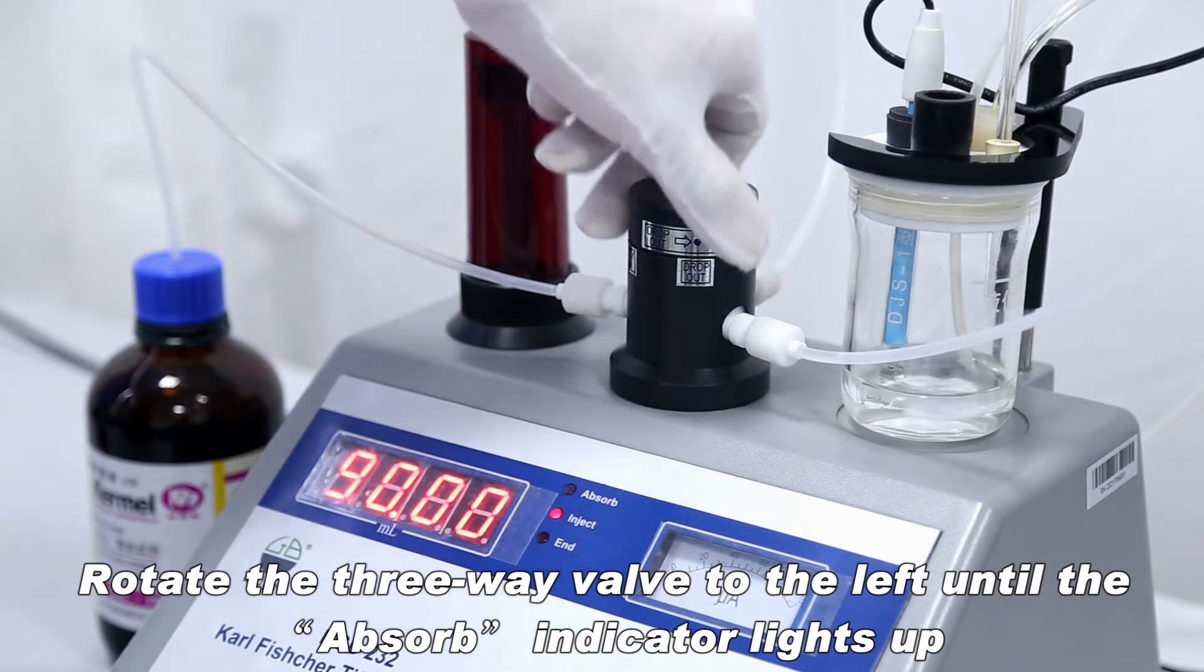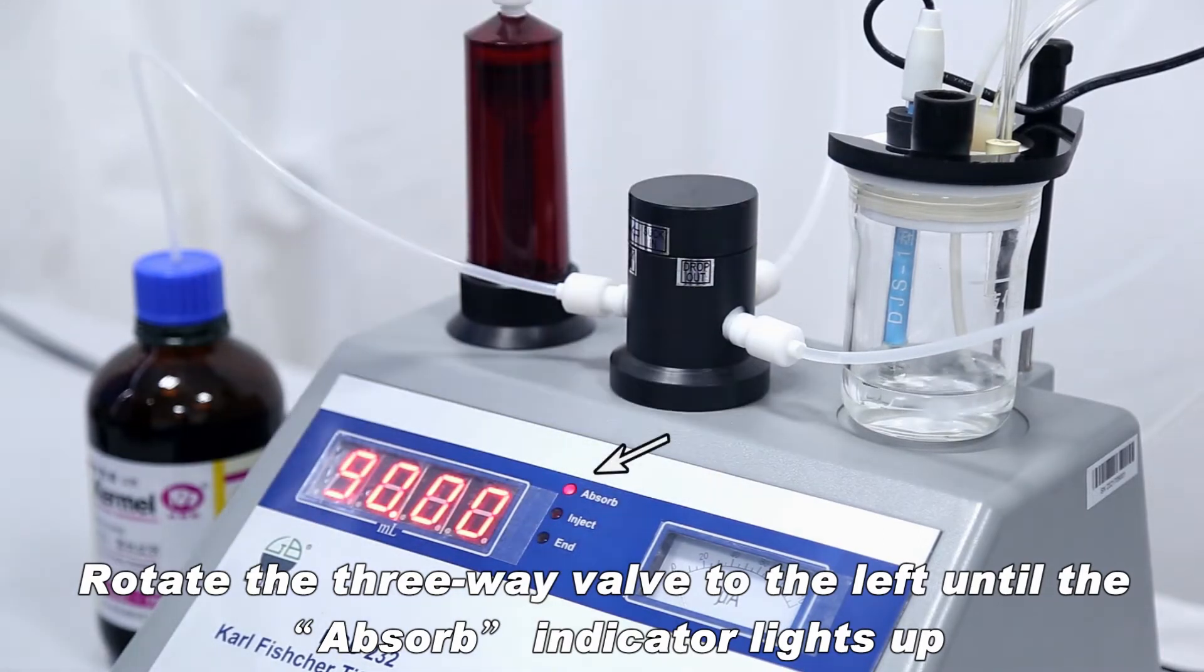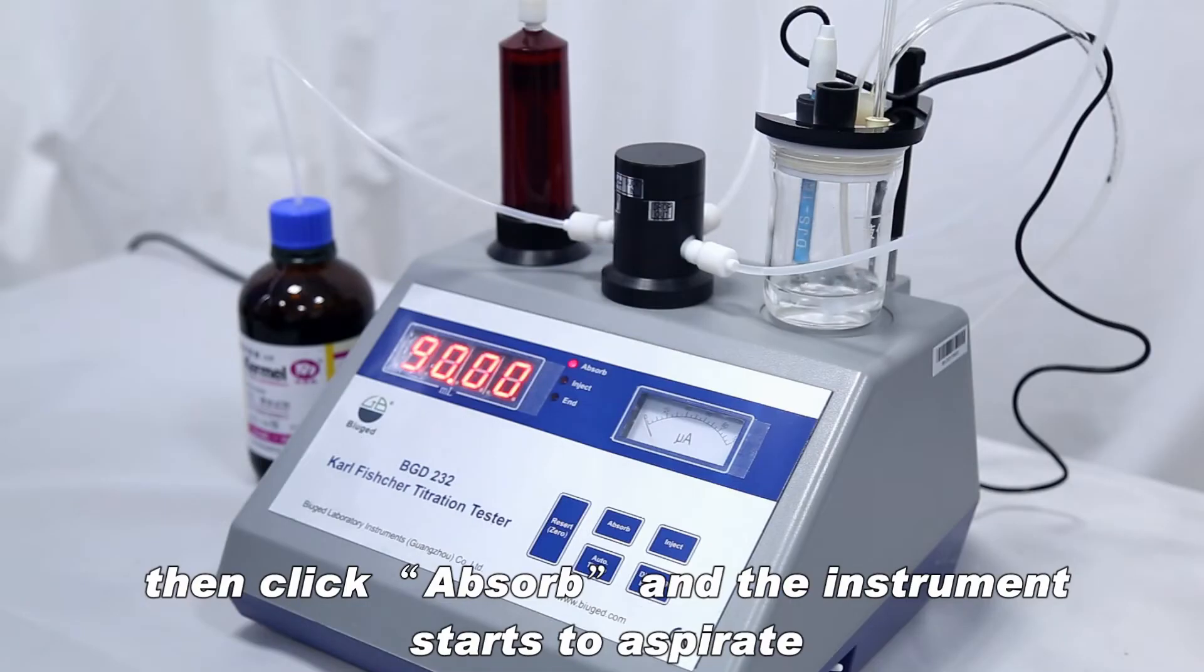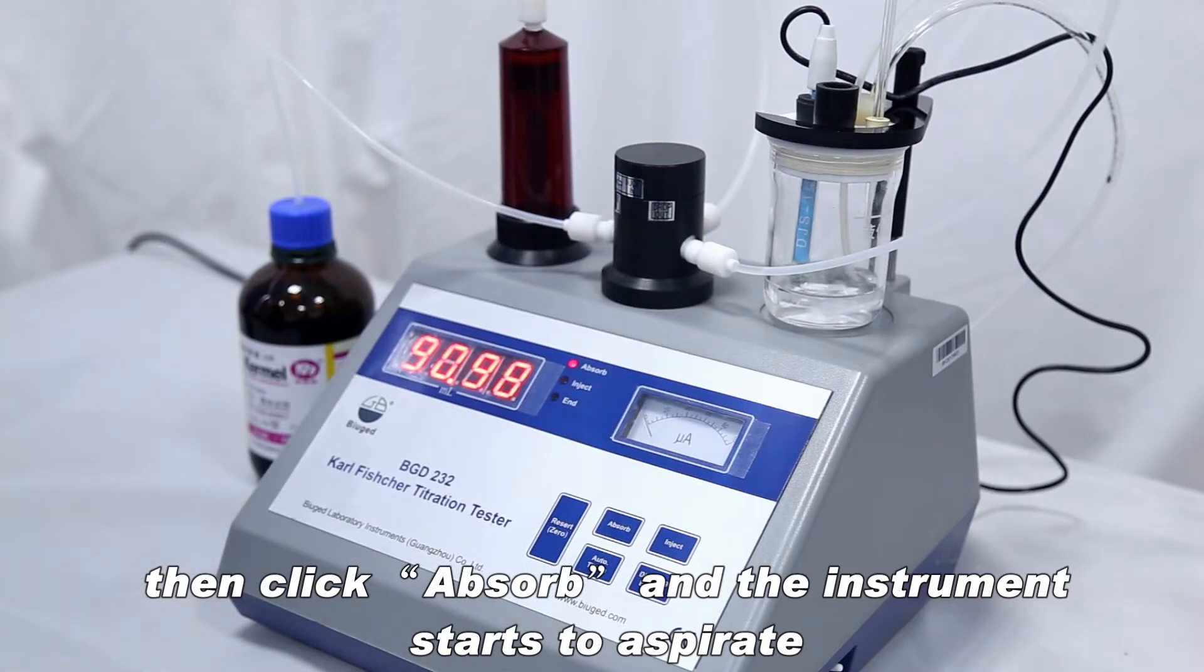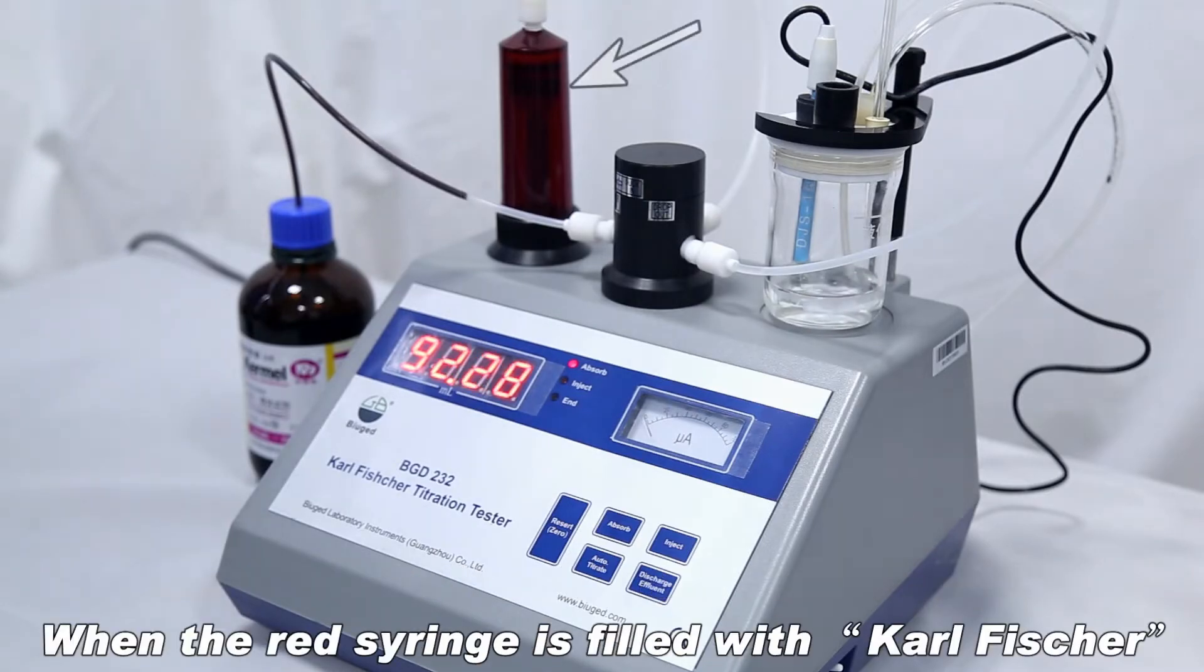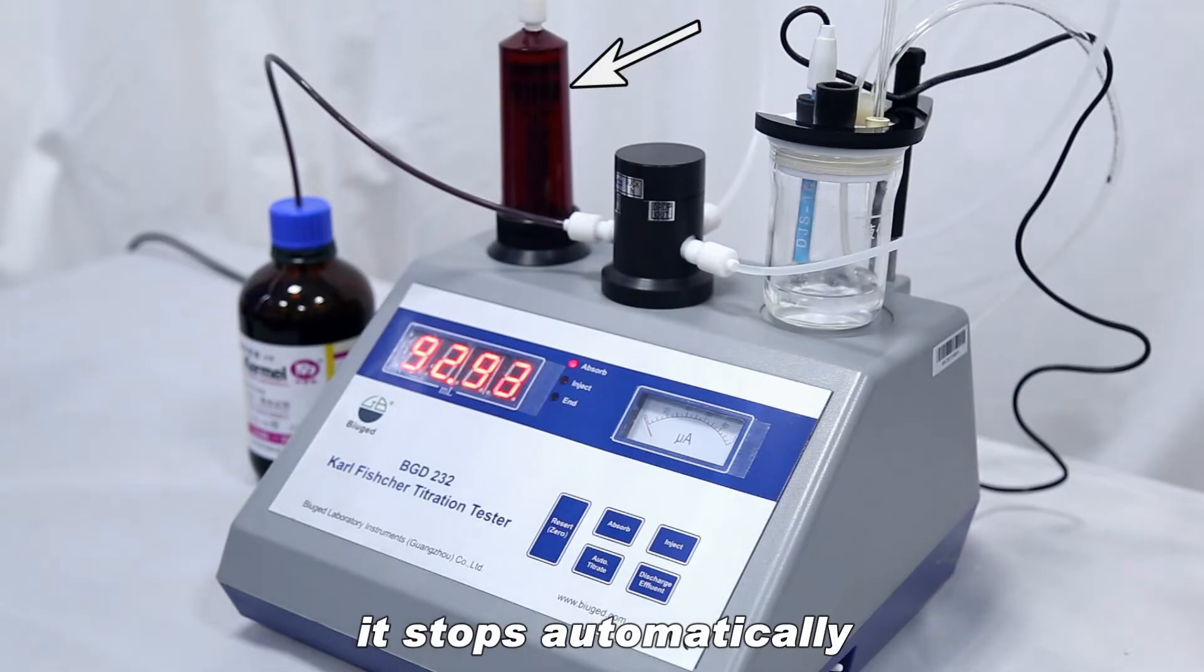Rotate the three-way valve to the left until the absorb indicator lights up, then click absorb and the instrument starts to aspirate. When the red syringe is filled with Karl Fischer, it stops automatically.